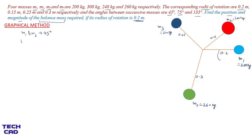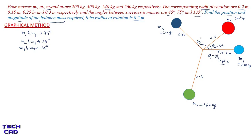The angle between m1 and m2 is 45°, between m2 and m3 is 75°, and between m3 and m4 is 135°. You have to find the angles with respect to the horizontal reference line, which represents the radius of rotation of the first mass. Theta1 = 0°, theta2 = 45°, theta3 = 45° + 75° = 120°, and theta4 = 120° + 135° = 255°. This completes the space diagram.